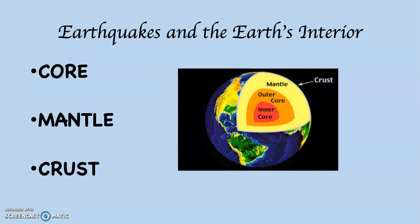In some ways our planet is analogous to an egg, which also has three components: the yolk, the white, and the shell. The percentages of each line up so that about 1% of the total mass of an egg is the shell, and about 1% of the total mass of our planet is the crust. Likewise, the mantle composes a similar percentage to our planet as the white does to an egg, and the core composes a similar percentage as the yolk does to an egg.